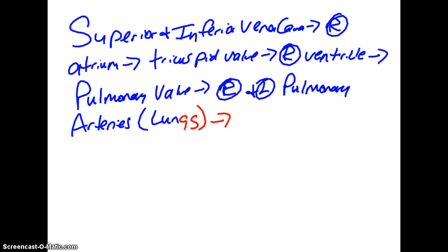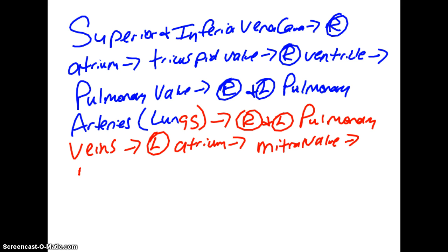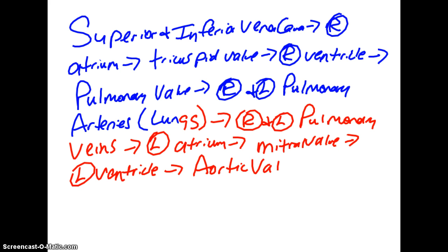After it goes out to the lungs to become oxygenated, it comes back to the heart via the right and left pulmonary veins. Then to the left atrium, through the mitral valve, into the left ventricle. The left ventricle is the major pumping chamber of the heart. From the left ventricle through the aortic valve, then out to the aorta, which is the largest artery of the body, and then from the aorta it goes to the rest of the body.